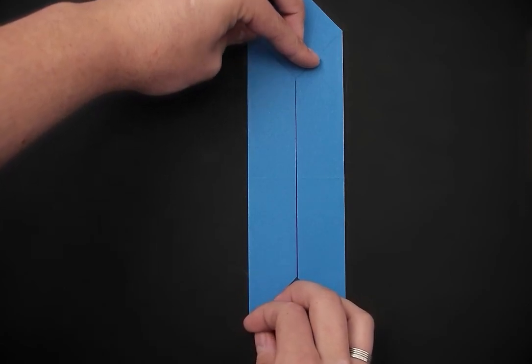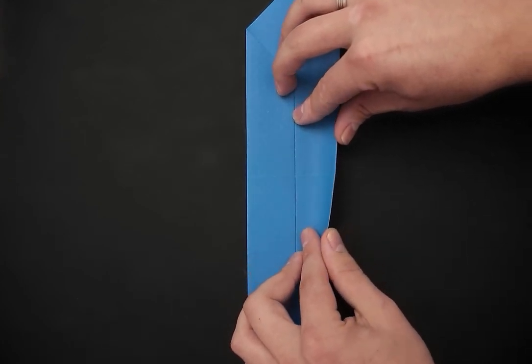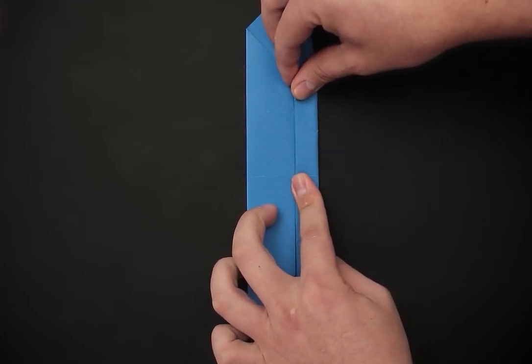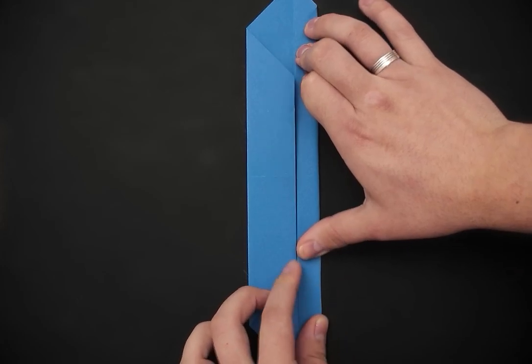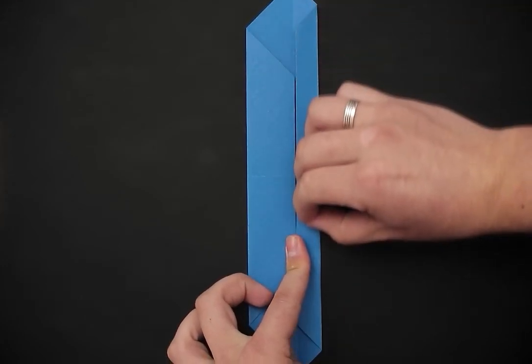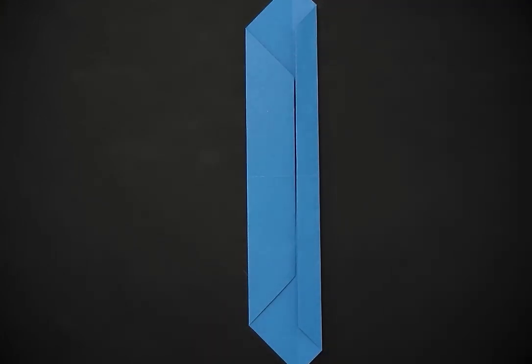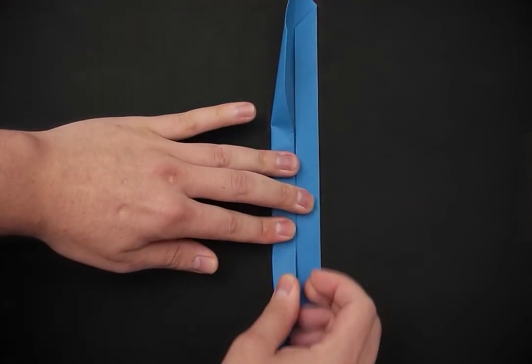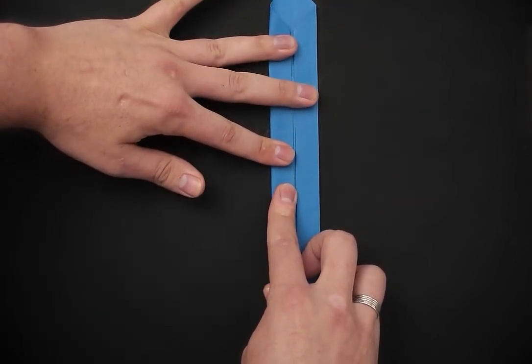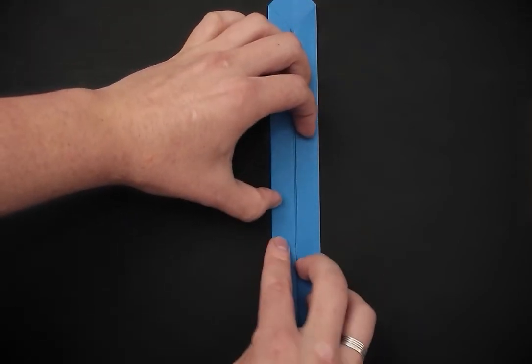The paper has already been folded twice. Let's repeat the same step by folding a third time. So, the right side to the middle, and then the left side to the middle as well.